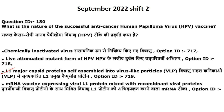Coming to September 2022, Shift 2. First question: what is the nature of the successful anti-cancer human papillomavirus vaccine? It is an L1 major capsid protein self-assembled into virus-like particles. Answer is option 3. Bio-augmentation refers to addition of selected microbes — both archaea and bacteria — to a polluted site to enhance biodegradation. Answer is option 4.